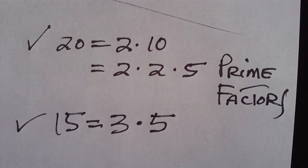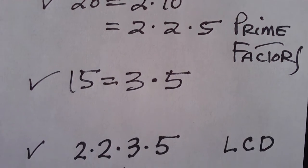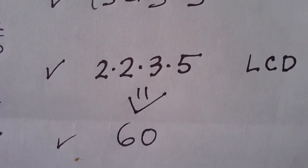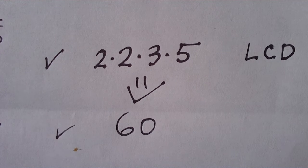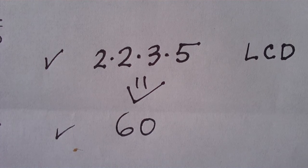So, two appears twice in one of these prime factorizations. Three appears once and five appears once. So, our LCD is two times two times three times five, which is sixty.